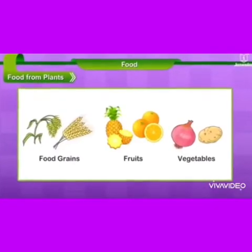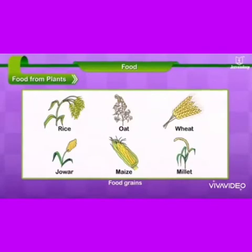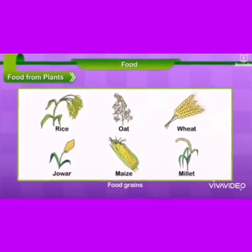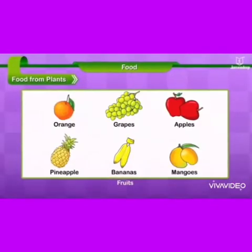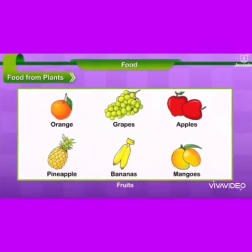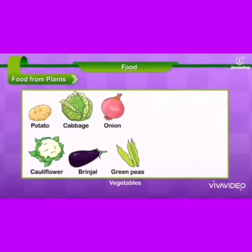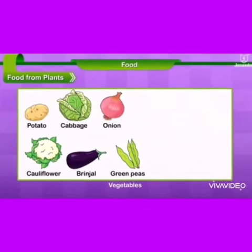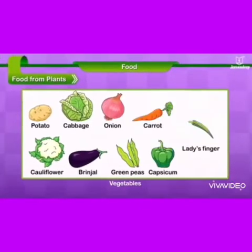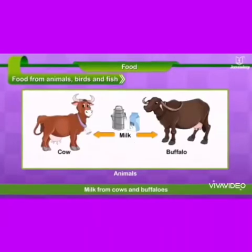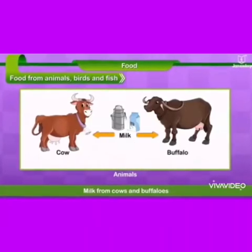Here are some foods which we get from plants, like food grains, fruits, and vegetables like potato, cabbage, onion, carrot, and ladies finger, etc.